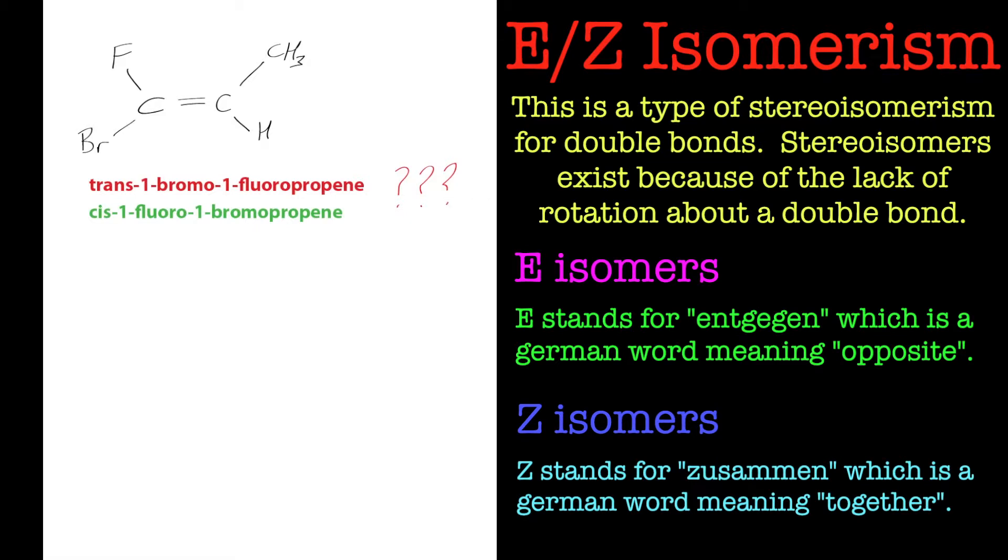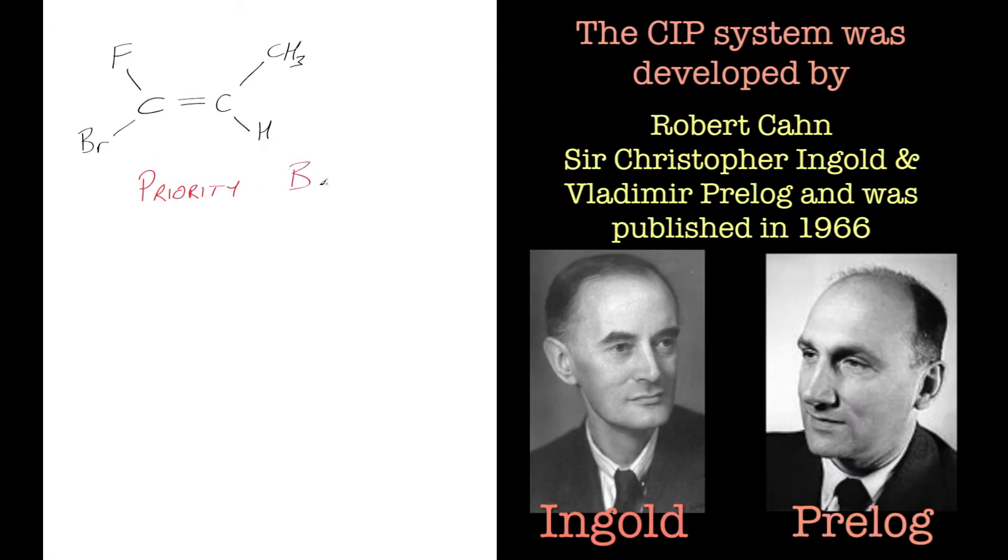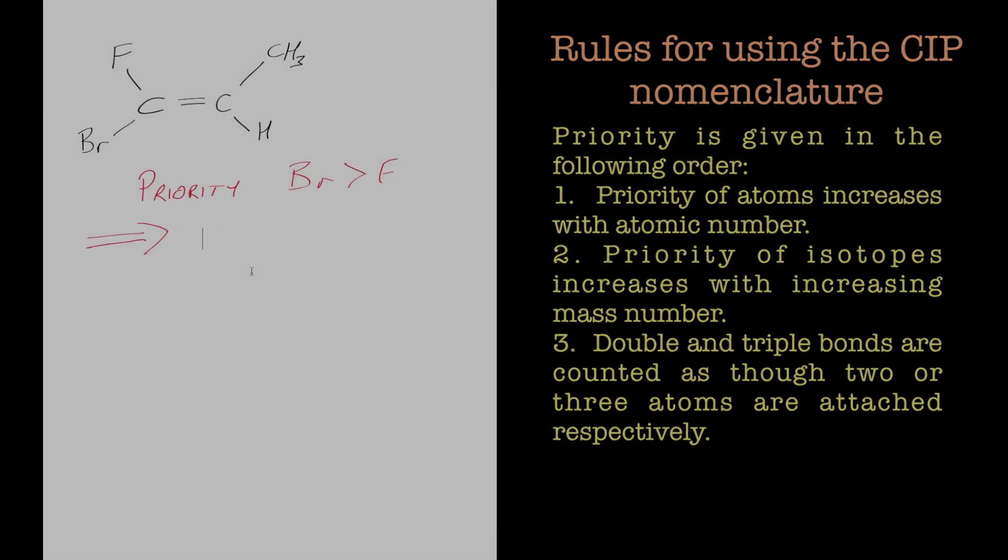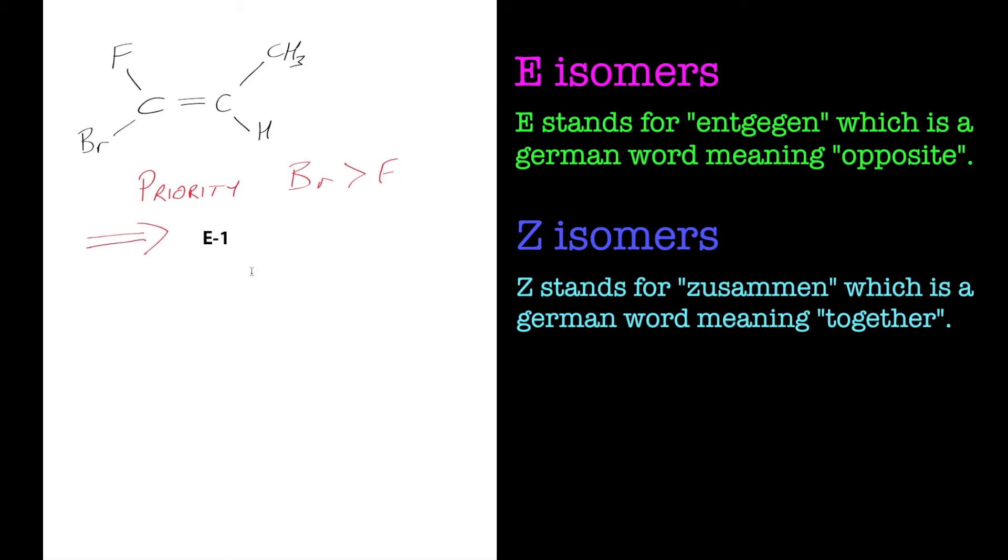Well that's where E and Z nomenclature really are superior to cis and trans nomenclature. Because we use the Cahn-Ingold-Prelog type of naming system, we give it priority. Bromine has got priority over fluorine because it's a higher atomic number. So looking at this compound, because bromine is on the opposite side to the methyl group, we would call this E-1-bromo-1-fluoropropene.